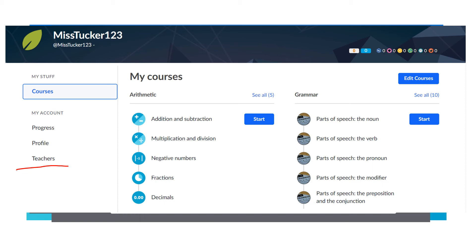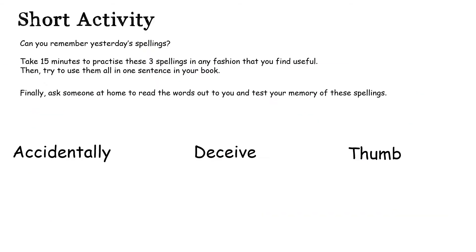Before you try today's words, test yourself on the three words that we did yesterday — which are 'generous', 'chorus', and 'tongue'. Check your practice from yesterday to see if you got those correct. Well done if you did, they're tricky ones, especially 'generous'. Now you have 15 minutes to practise these new three words in any fashion you find useful — think robot writing, writing backwards, rainbow writing. Write each word in a sentence and check you've spelled them correctly, then ask somebody at home to do a final test with you. Good luck.